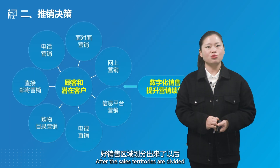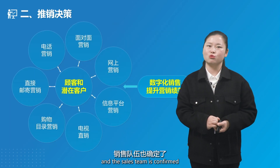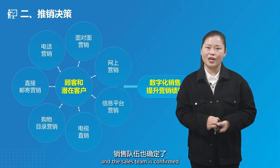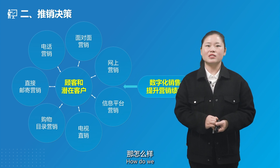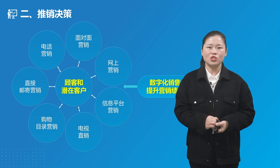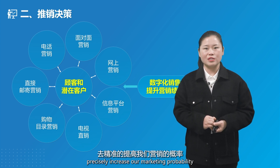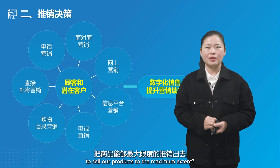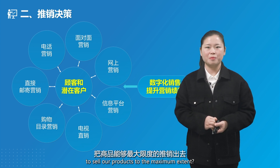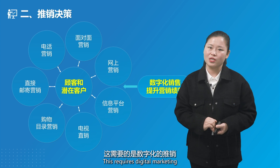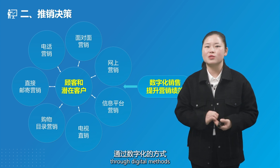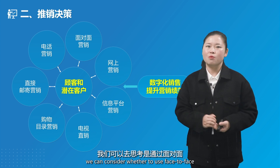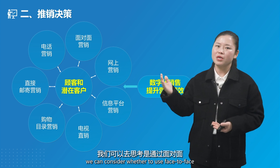After the sales territories are divided and the sales team is confirmed, we start to execute the marketing specifically. How do we precisely increase our marketing probability to sell our products to the maximum extent? This requires digital marketing. To improve marketing performance through digital methods, we can consider whether to use face-to-face, telephone,